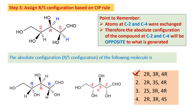This is how we assign configuration for molecules using a perspective formula. Step 1: include the missing groups. Step 2: shift the least priority to the broken wedge, then assign configuration. Step 3: for whichever positions were shifted, change the configuration to the opposite. Then find the configurations at all stereocenters and locate the answer. I hope you understood. Thank you.